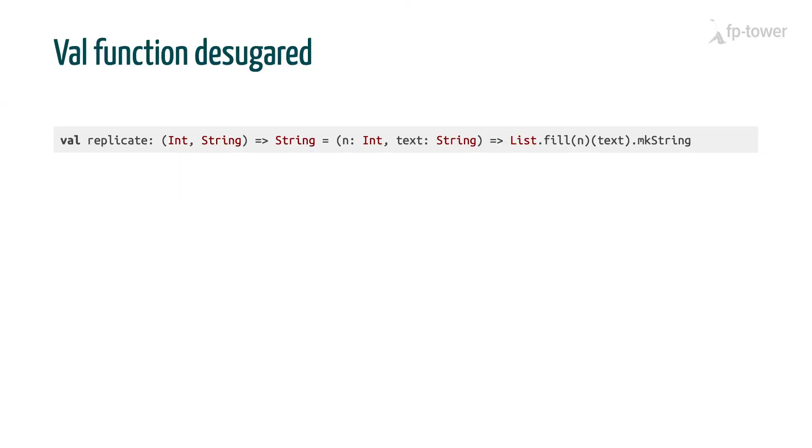So we've seen that as far as the Scala compiler is concerned, a val function is no different from any other object in the language. However, if we look at the syntax of a val function, it doesn't look ordinary at all.